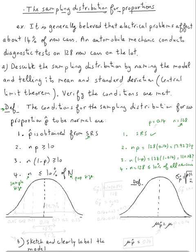Not only that, we know that since all of these conditions are met, we know the sampling distribution. And by the way, this is what they mean described by naming the model. Well, the model is actually a normal model, and telling its mean and standard deviation. By definition, the mean of all the p-hats, of all the sample proportions, is equal to the population mean. So in our case, mu p hat is going to be 0.14. This is the population proportion.